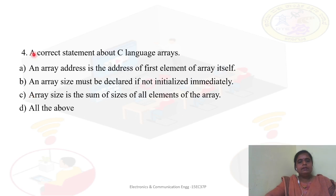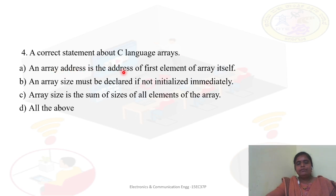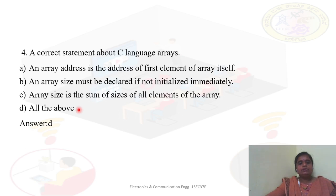A correct statement about C language arrays: An array address is the address of the first element of the array itself — yes, the first element is the starting address of the array, so this is true. An array size must be declared if not initialized — either you initialize it or declare the size, so this is also correct. The array size is the sum of the sizes of all the elements of the array — also correct. All statements are true, so the answer is D.